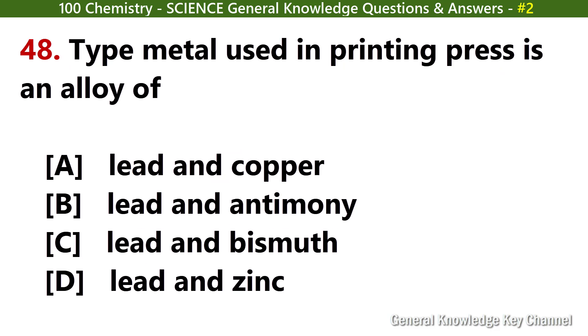Type metal used in printing press is an alloy of? Answer B: Lead and antimony.